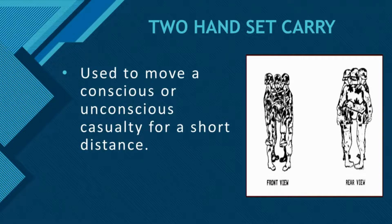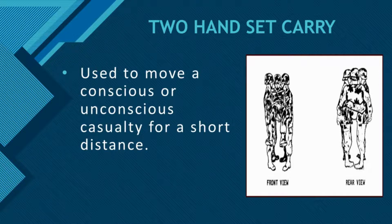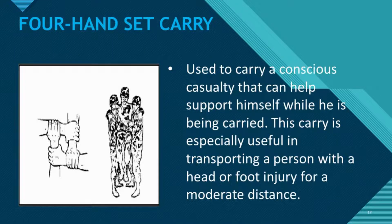Another one is what we call two-hands seat carry, which is used to move a conscious or unconscious casualty for a short distance. In the front view, the hands of the two rescuers cross each other and the casualty sits on their arms. Then there is the forehand seat carry, which is used to carry a conscious casualty who can help support himself while being carried. This carry is especially useful in transporting a person with a head or foot injury for a moderate distance.